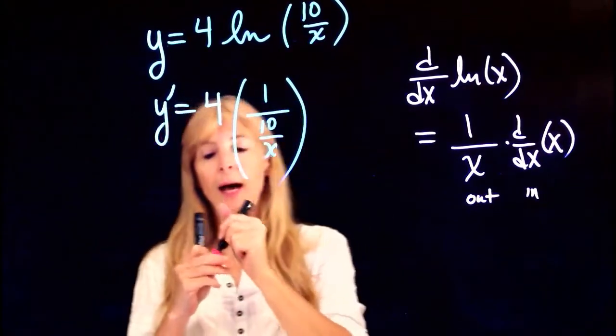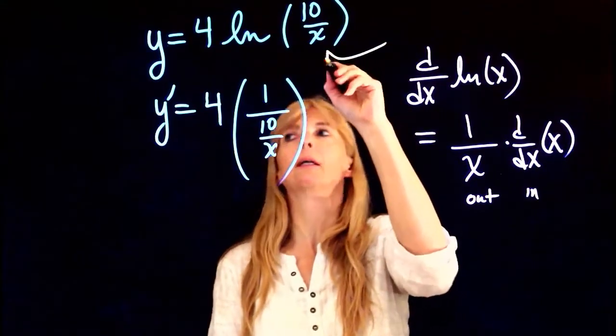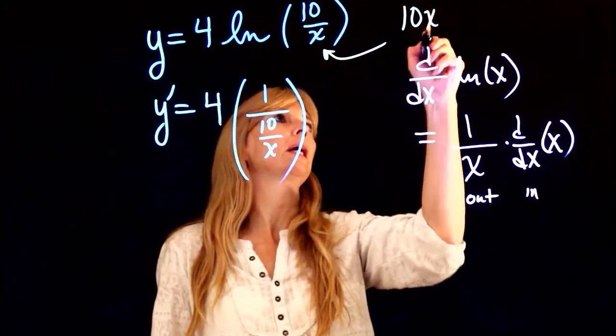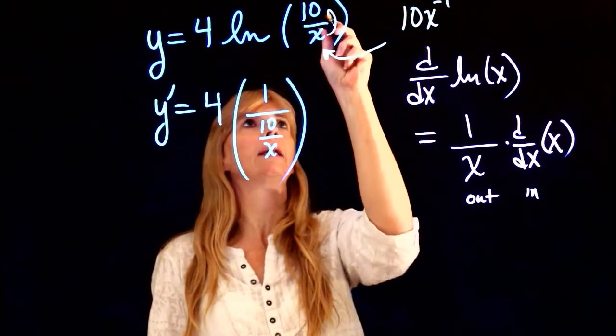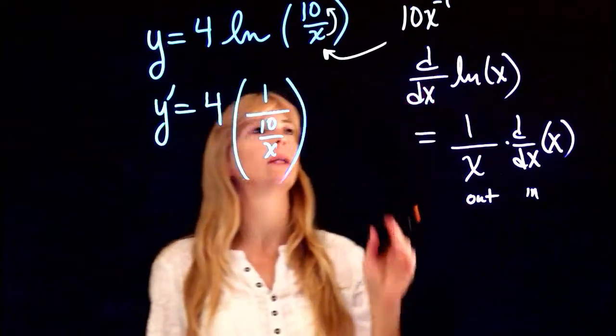Typically what I do when I have something in the denominator like this is I will rewrite this as 10x to the negative 1. All I did was bring—uh-oh, kind of off screen—but that's to the negative 1 power.